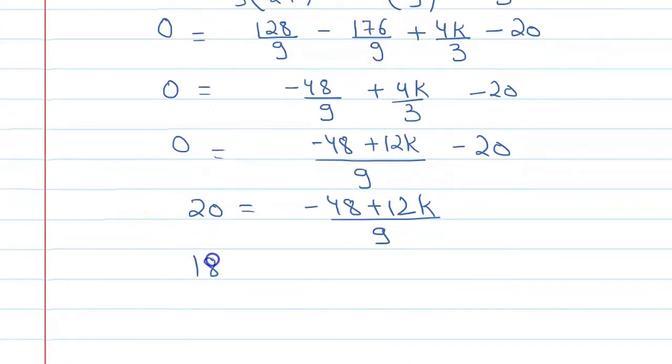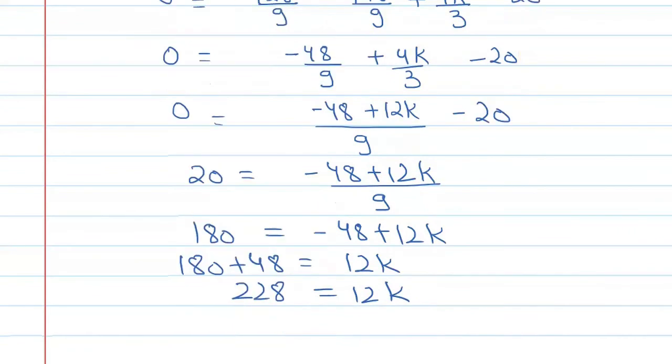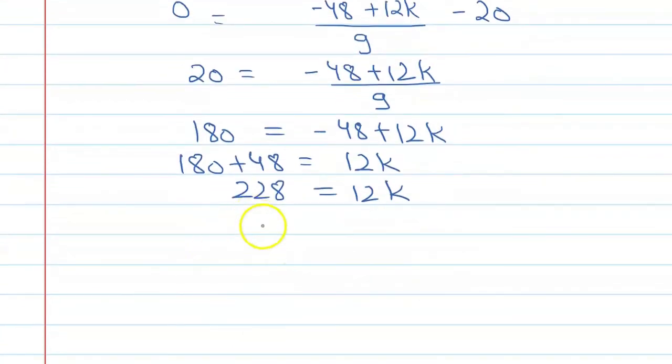180 equals minus 48 plus 12k. If we shift 48, it is 180 plus 48 equals 12k. Now if you add 180 and 48, you will get 228 equals 12k. So if you find k value here, it will be equal to 228 upon 12.